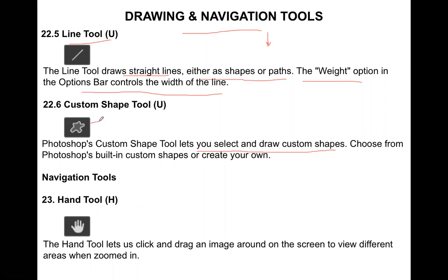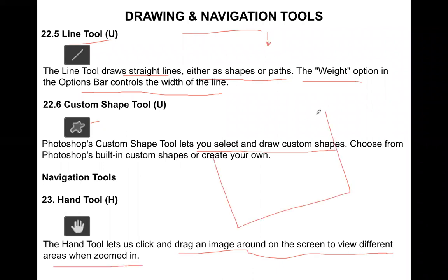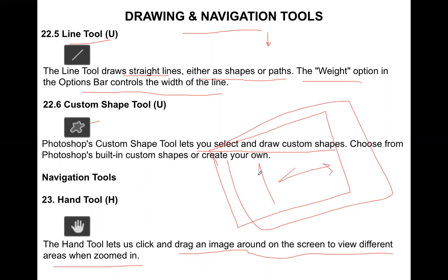Next we have the Navigation Tools. The first tool is the Hand Tool. The Hand Tool lets you click and drag an image around on the screen to view different areas when zoomed in. So when you have zoomed into an image, you can use the Hand Tool to navigate within the image.